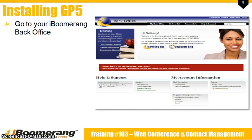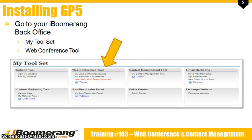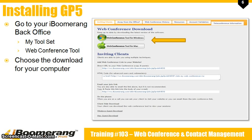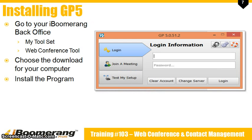To download GP5, go to your iBoomerang back office at my.iBoomerang.com. Scroll down to your toolset and select web conference tool. Choose the correct download for your computer: if you're using Microsoft Windows, click on web conference tool for Windows; if you're using a Mac, choose the web conference tool for Mac button. Follow your computer's instructions to install the program.